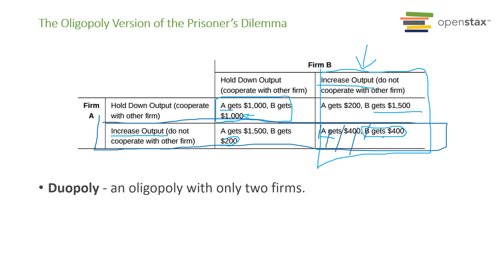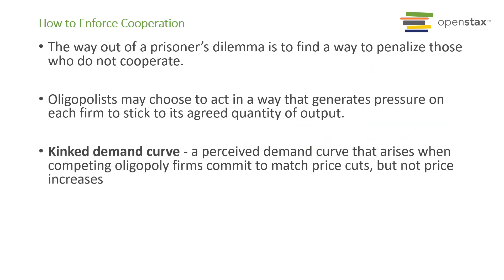One way to get around the cheating scenario in the prisoner's dilemma is the kinked demand curve, where companies can punish others for cheating. If you lower prices or cheat, the other company will match that behavior. But if you stick to the original agreement, the other company will also stick to it. It's the threat or practice of matching the other company's behavior that produces what is called a kinked demand curve.